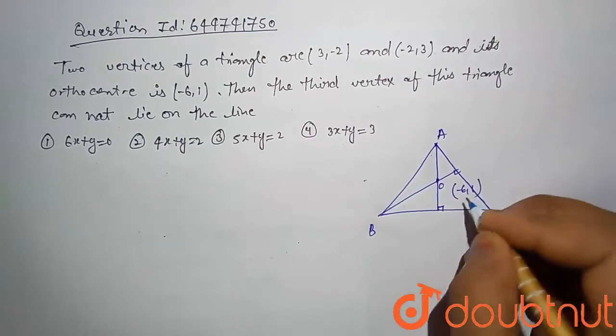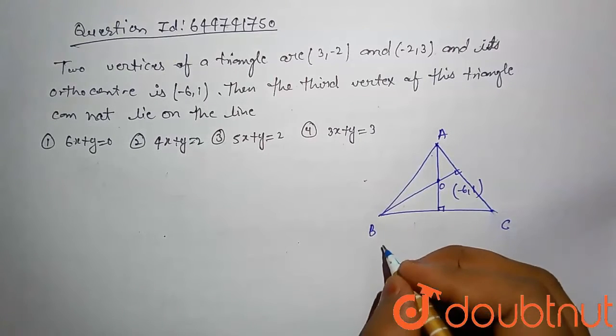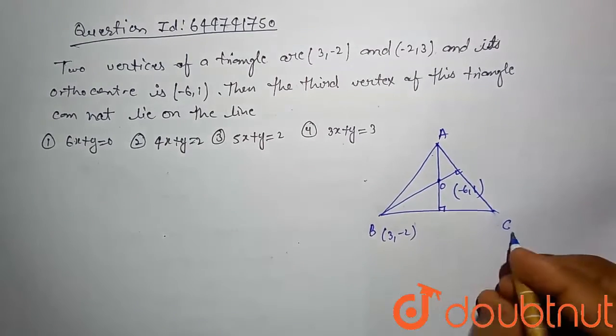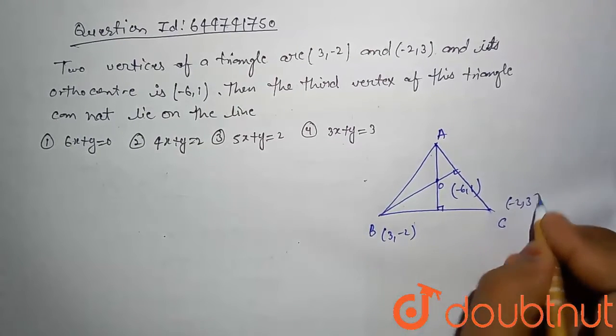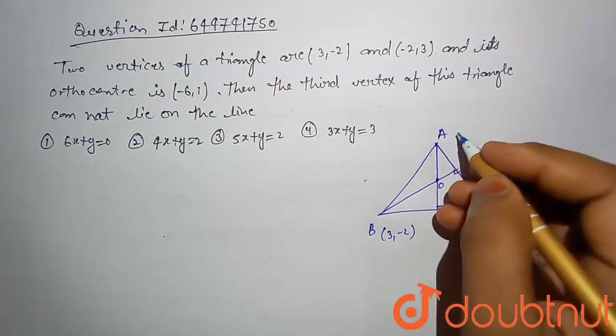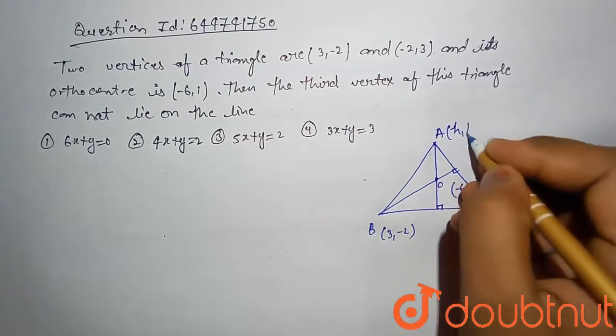And here B coordinates are also given (3, -2), and C coordinate also given (-2, 3). We have to first find A coordinate. Let's assume that coordinate is (h, k).